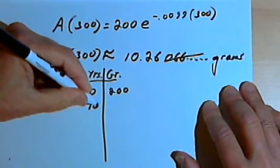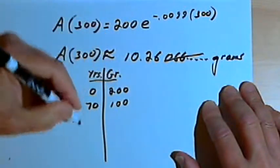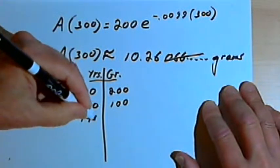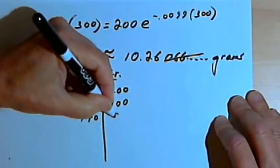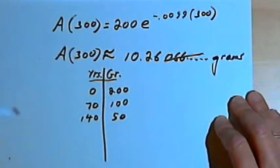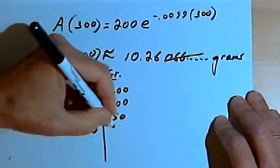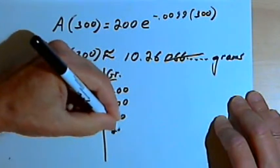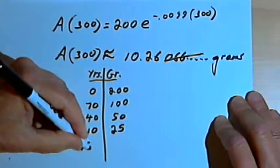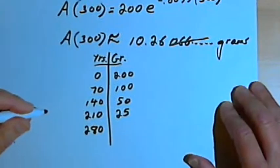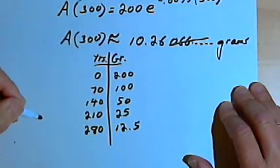After 70 years, that's one half-life, we'll have half as much, so we'll have 100 grams. 70 years later, or at 140 years, we'll have half as much again, so that's 50 grams. After 210 years, another 70, we'll have half of 50, that's 25. 70 years later gets us to 280 years, and we'll have half of 25, which is 12.5.